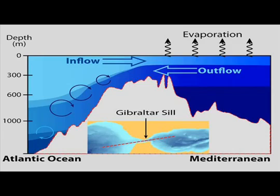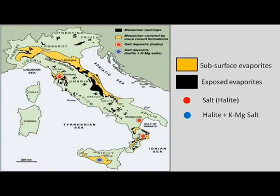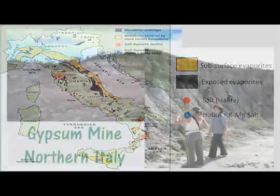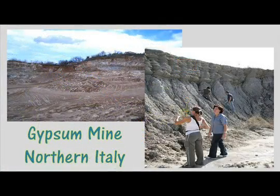At the narrow strait at Gibraltar, Atlantic waters are carried by a near-surface current into the Mediterranean, and below that, cooler, more saline waters are carried out of the Mediterranean and back into the Atlantic. Massive deposits of evaporites like gypsum and salt are found throughout the Mediterranean Basin, and these sources have been mined by humans for thousands of years.